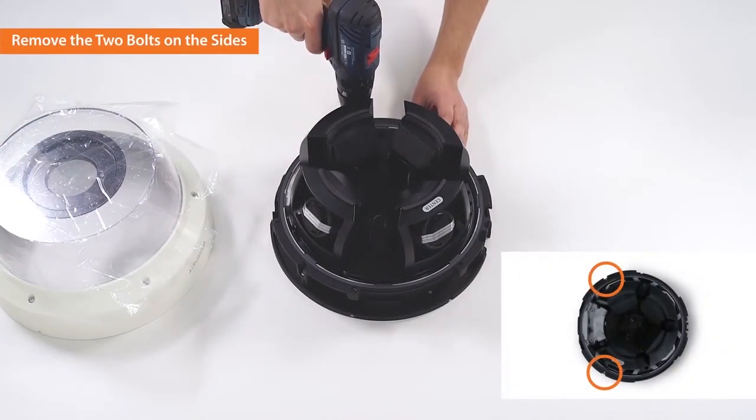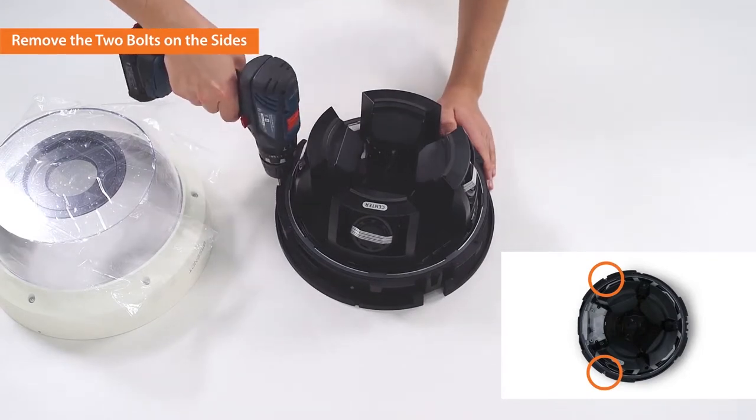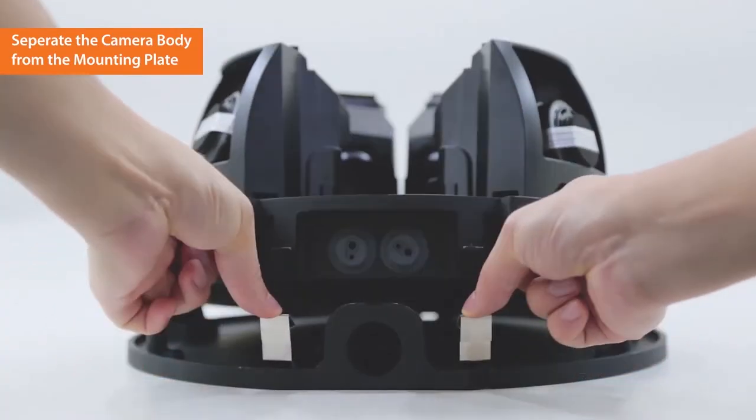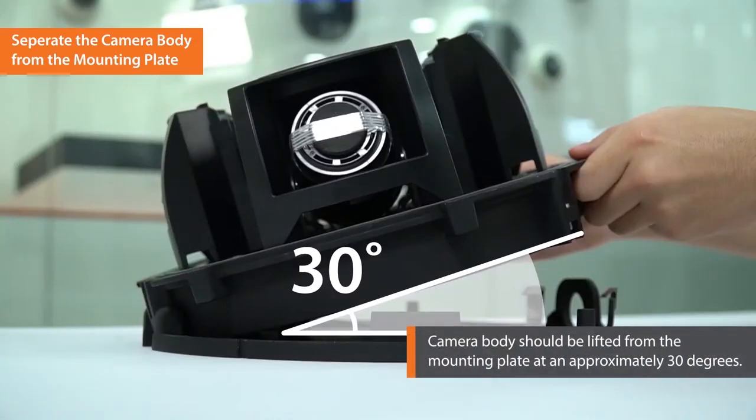Next, remove the two bolts on the sides. Now, separate the camera body from the mounting plate by pulling the plate spring, and then lift the body at approximately 30 degrees.